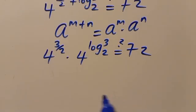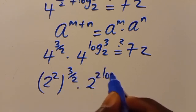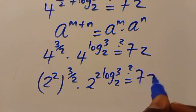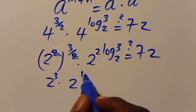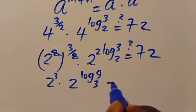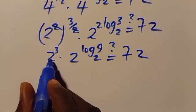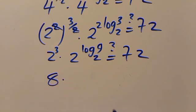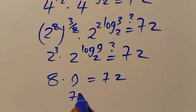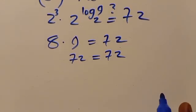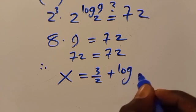Writing 4 as 2², we have (2²)^(3/2) times (2²)^(log base 2 of 3). Simplifying: 2^3 times 2^(2 log base 2 of 3). That gives 8 times 2^(log base 2 of 9), which equals 8 times 9, giving us 72. Since the left-hand side equals the right-hand side, x equals 3/2 plus log base 2 of 3 is confirmed correct.